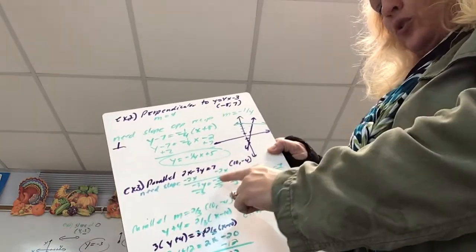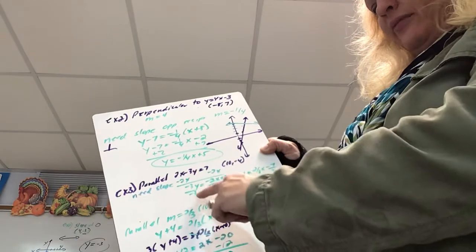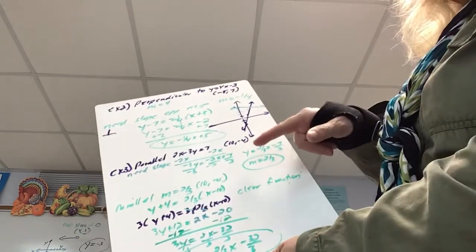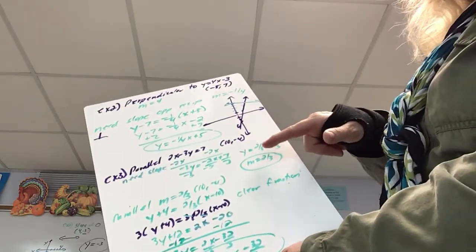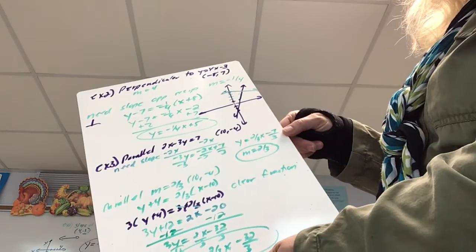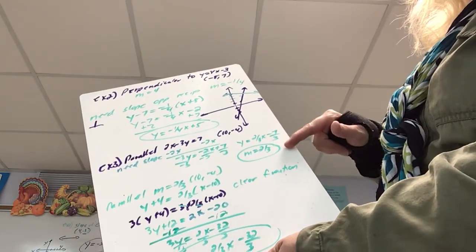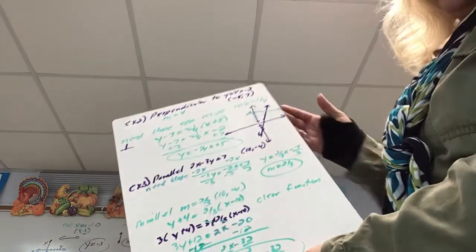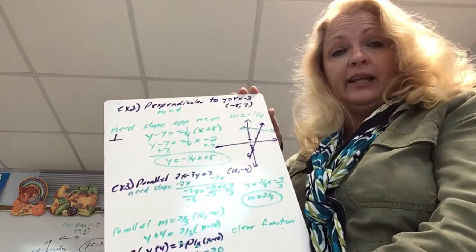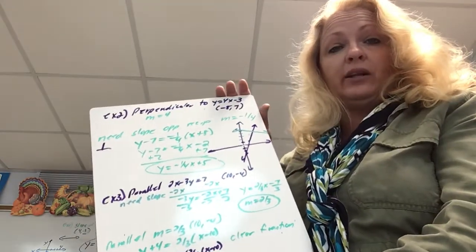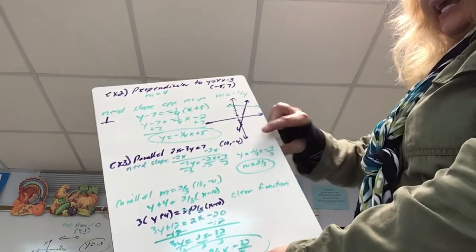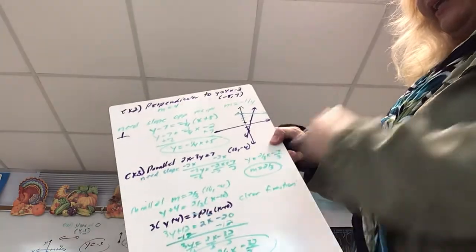I'm going to subtract 2x and then divide by negative 3. That gives me the equation y equals two-thirds x minus seven-thirds, so the slope of this line is two-thirds. I need to write an equation of a line parallel to this — parallel means the same slope, so I'm using slope two-thirds, and it goes through the point (10, negative 4).